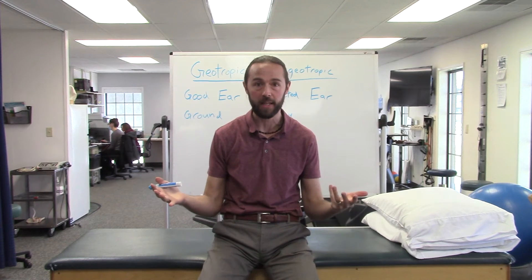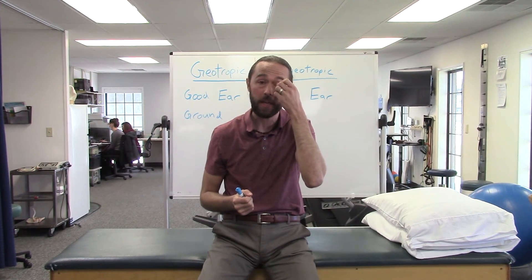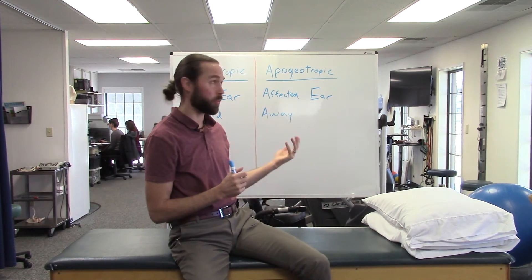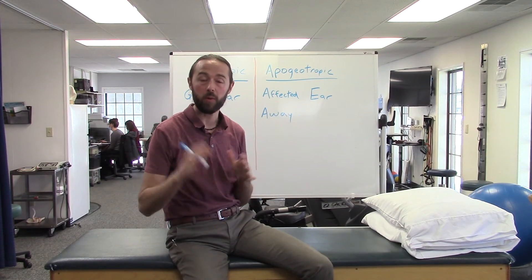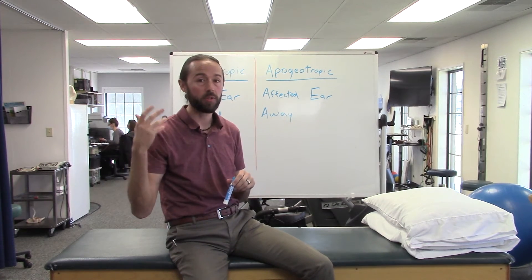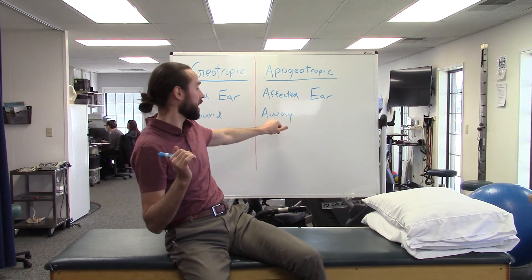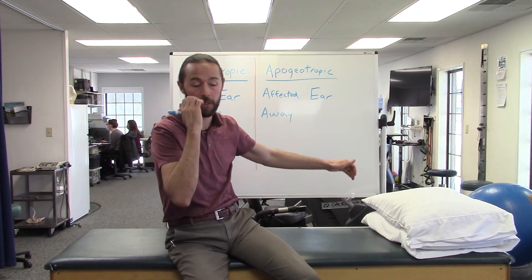You look at the ground for two minutes. Then give yourself or the client roughly ten minutes off, and then retest with the supine roll test to see if it worked. That's the easy one — geotropic. Now let's talk about the other one. If you have apogeotropic or ageotropic nystagmus, meaning the eyes are beating away from the ground during the supine roll test, you're going to go to the affected ear — the bad ear — and then look away.